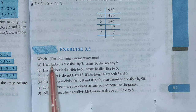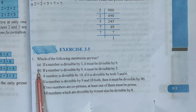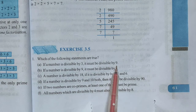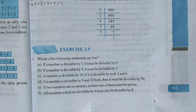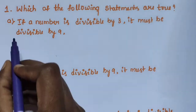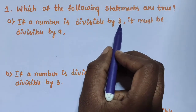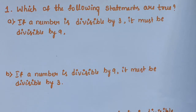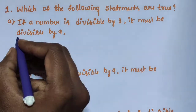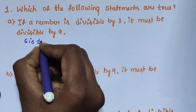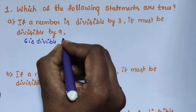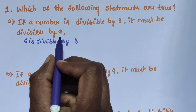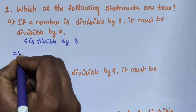Question number 1: which of the following statements are true? Sub-question A: if a number is divisible by 3, it must be divisible by 9. This statement is false, because 6 is divisible by 3 but is not divisible by 9.